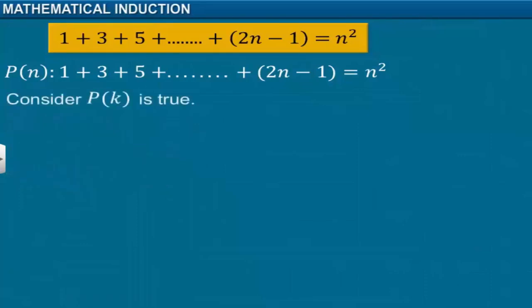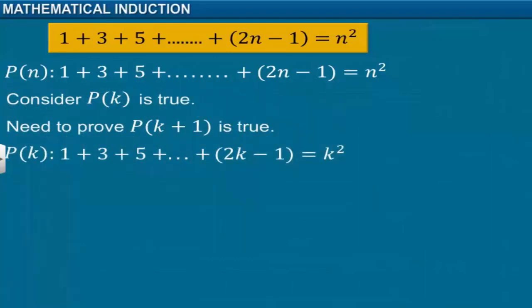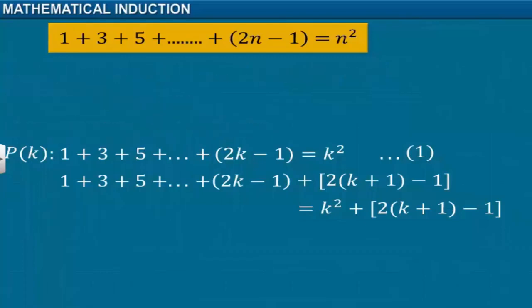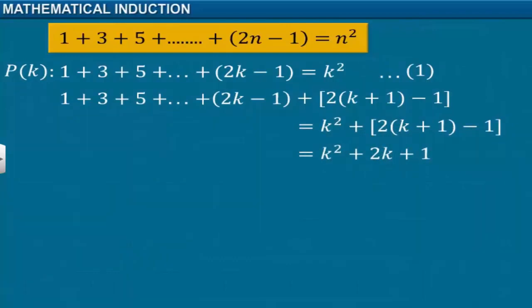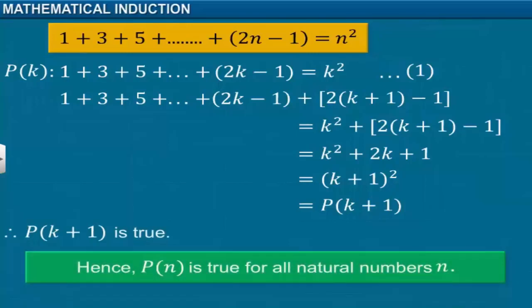Now let's consider if P(k) is true, where k is a positive integer. We need to prove that P(k+1) is also true. Since P(k) is true, we get this statement — let this be equation 1. Let's add 2(k+1) minus 1, the next odd integer, to both sides of equation 1. On simplification, the right side of the equation becomes (k+1) squared. Therefore, P(k+1) is also true whenever P(k) is true. Hence, P(n) is true for all natural numbers n.